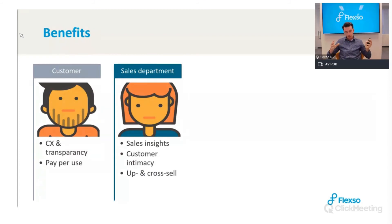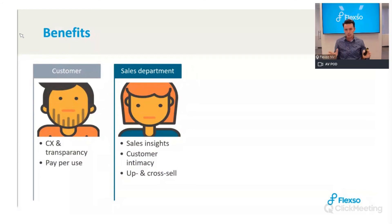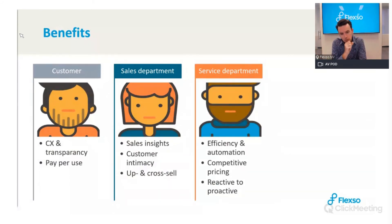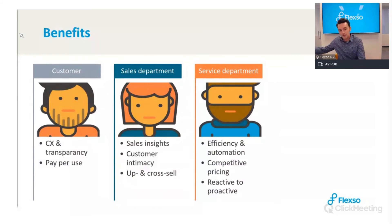The sales department gets the most intimate relationship possible with their product at the customer site — a direct real-time connection — representing a new dimension in customer intimacy. It provides valuable information for recommendations, upsells, and cross-sells. The service department works more cost-efficiently: fewer on-site visits, no meter readings, fewer routine preventive visits. They can have a more profitable service model with lower costs.